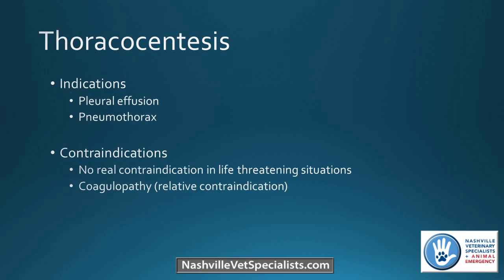Those are the indications for performing a thoracocentesis if you see either of those things. There's no real contraindication in a life-threatening situation. If the patient has a coagulopathy, it's somewhat relative — if it's going to be life-saving, go ahead and do the procedure. But if it's only a mild pleural effusion and you're worried about bleeding, you may want to wait a little bit.